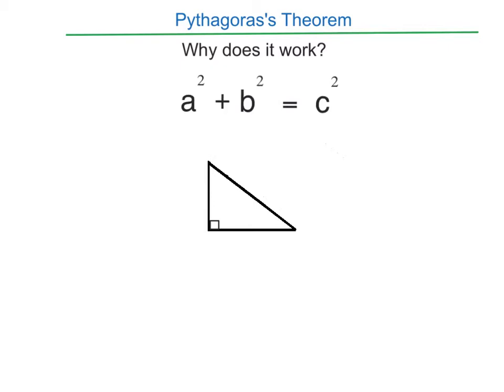What we do is we can use this rule, a squared plus b squared equals c squared, to work out one of the sides if we know two other sides.